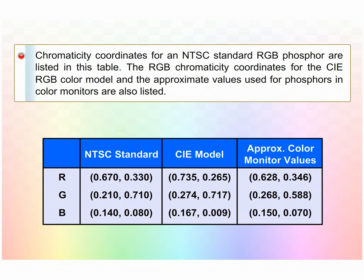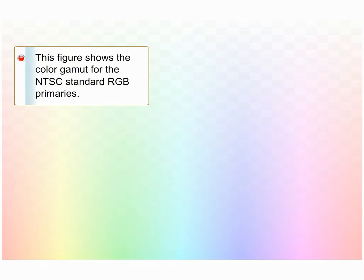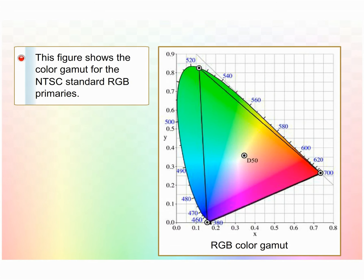Chromaticity coordinates for the NTSC standard RGB phosphor set are listed in a table, along with the RGB chromaticity coordinates for the CIE RGB color model and approximate values used for phosphors in color monitors. A figure shows the color gamut for the NTSC standard RGB primaries.